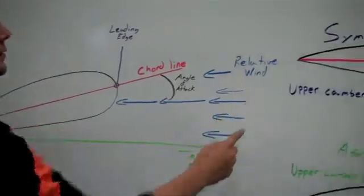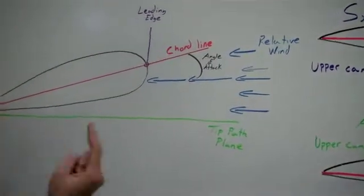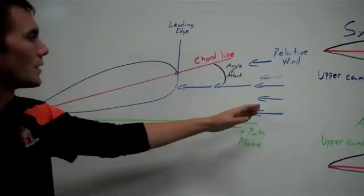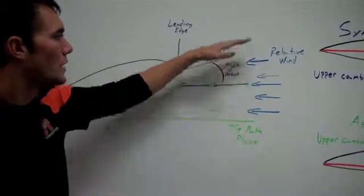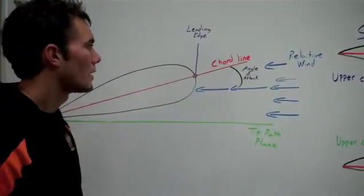Coming back up here, we have relative wind. As the blade has started to rotate around its axis of rotation, the engine started up, and wind is coming across the airfoil. As it comes in, it's going to change depending on what you're doing. We have an angle of attack that's going to constantly change.